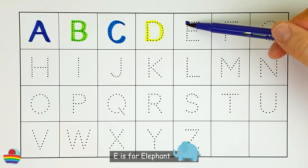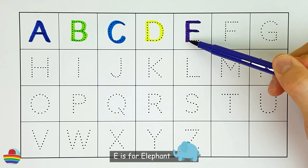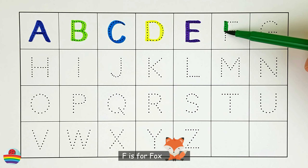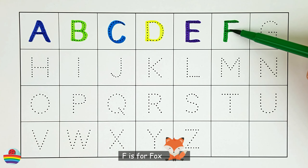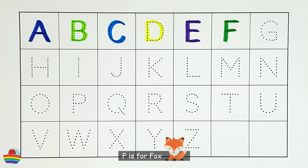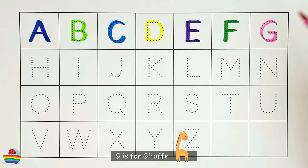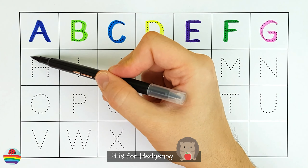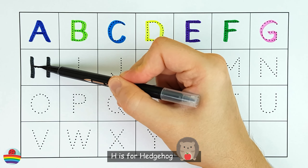E. E is for elephant. F. F is for fox. G. G is for giraffe. H. H is for hedgehog.